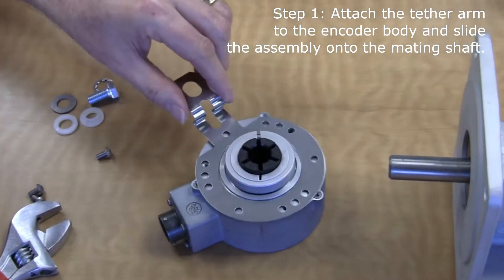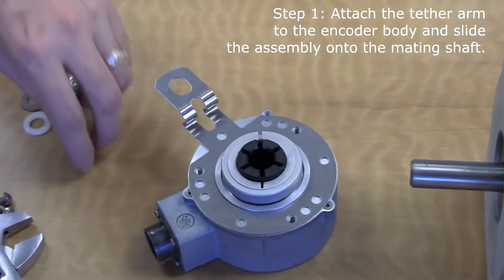Attach the tether arm to the encoder body and slide the assembly onto the mating shaft.